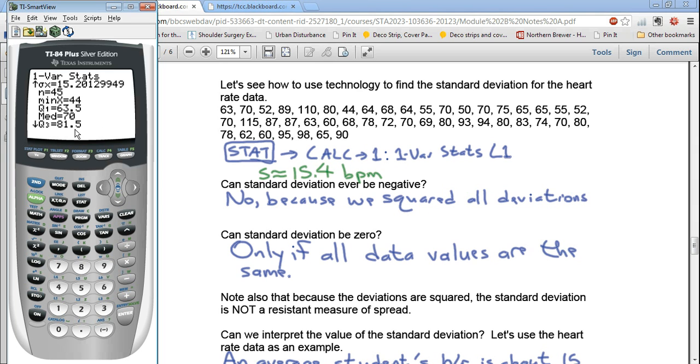The Q3 is 81.5 beats per minute. And again, 3 quarters of the students are below that, and 1 quarter are above. And then the maximum is 115 beats per minute.